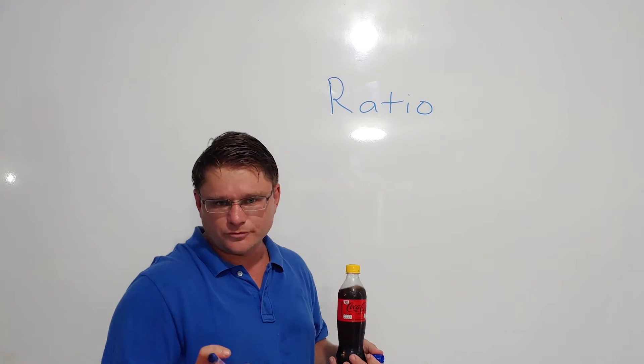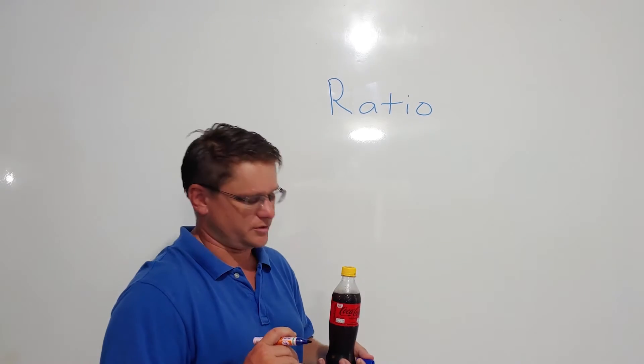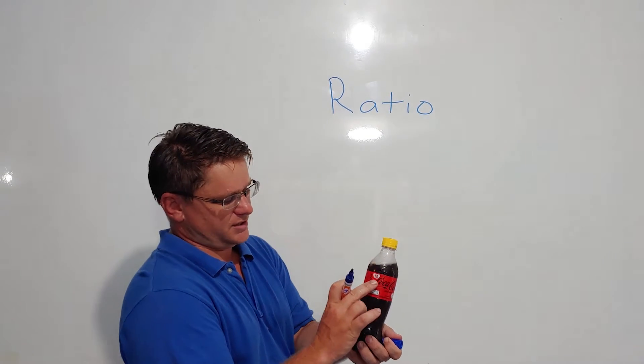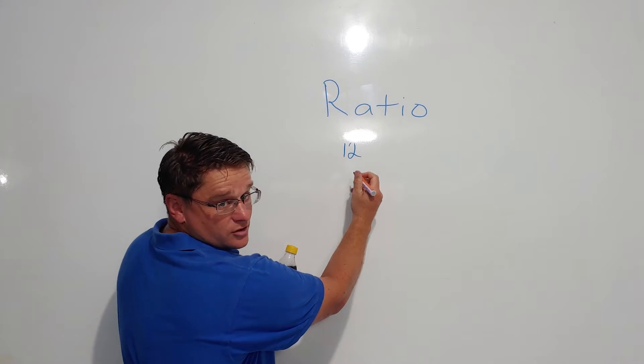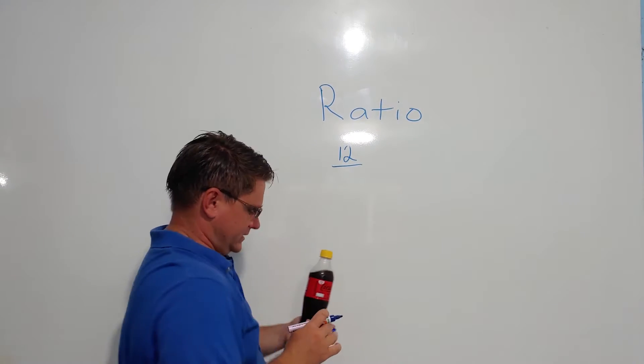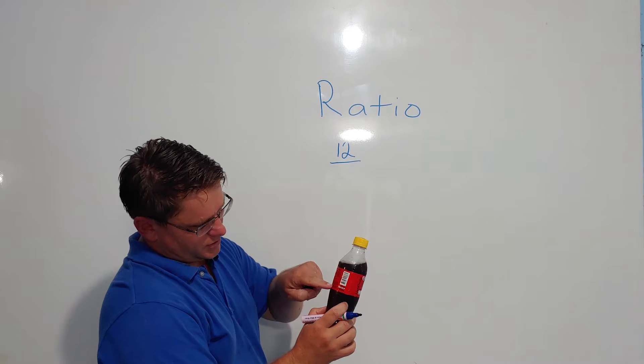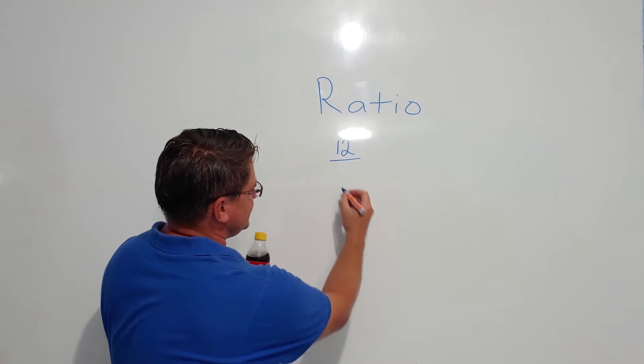All ratios are basically two fractions compared to each other. So this fraction is 12 baht. So we are going to put the money on top compared to 450 cc.